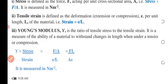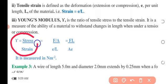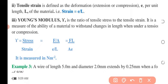Young's Modulus is defined as the ratio of tensile stress to tensile strain. It represents the ability of a material to withstand changes in length when under tension or compression. Mathematically, Young's Modulus equals stress over strain, which can be written as force over area divided by extension per length — resolving to the product of force and original length divided by the product of cross-sectional area and the extension. Young's Modulus is measured in Newton per meter square.